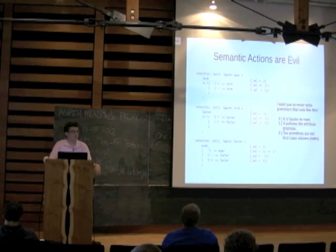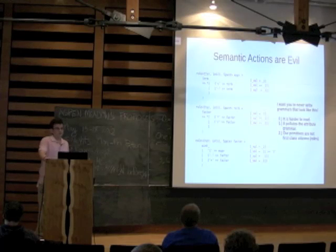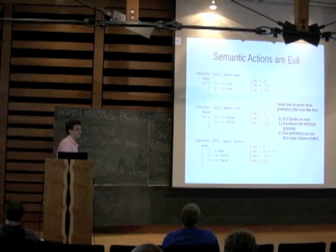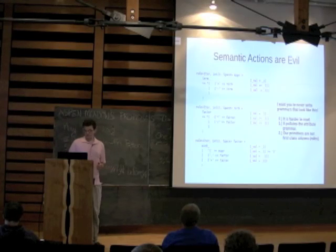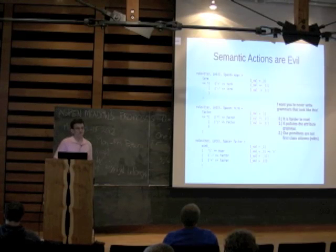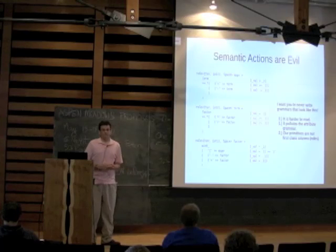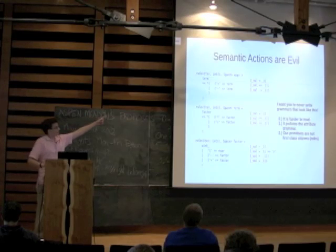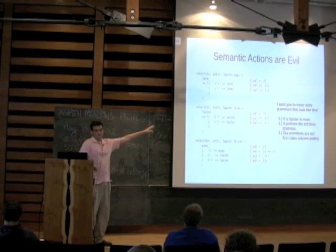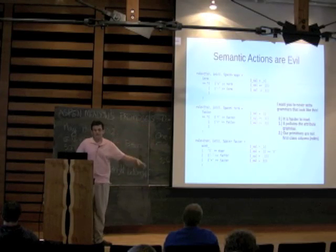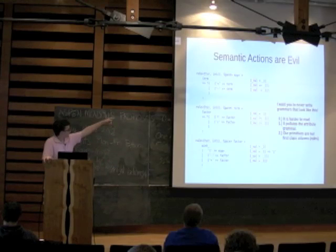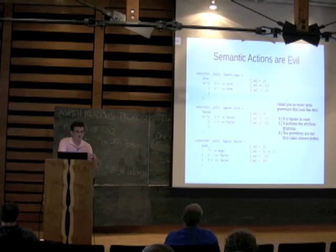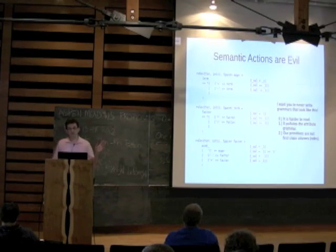Semantic actions are evil, and I would like people to stop using semantic actions unless absolutely necessary in their Spirit grammars. My reasoning is: first, it's harder to read a grammar when you've got semantic actions. Second, it pollutes the attribute grammar. If you see here, we've got an attribute of int — the only reason that attribute works is because of the semantic actions, because otherwise it would actually be a std::vector of int because of the Kleene stars. I don't have a problem with manipulating the attribute grammar; I just would like people to do it explicitly instead of having it done implicitly by semantic actions.